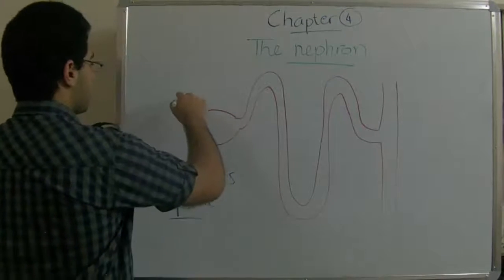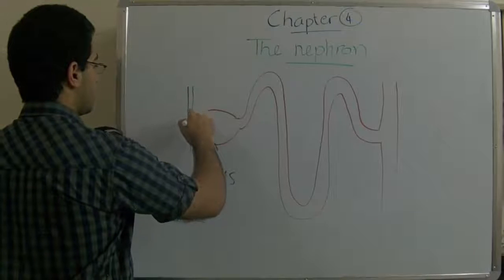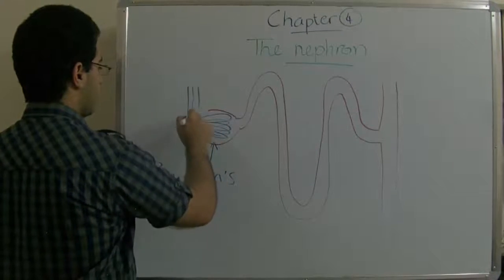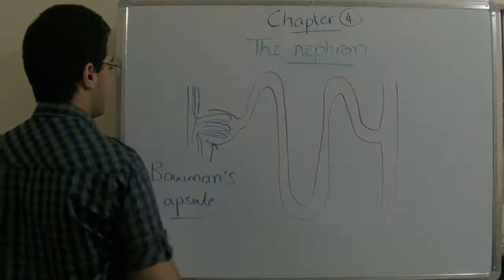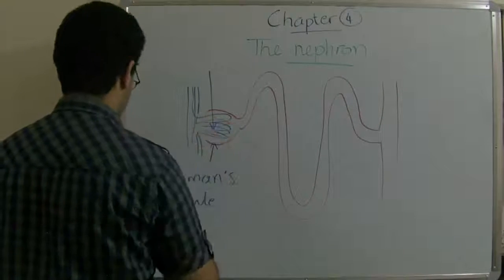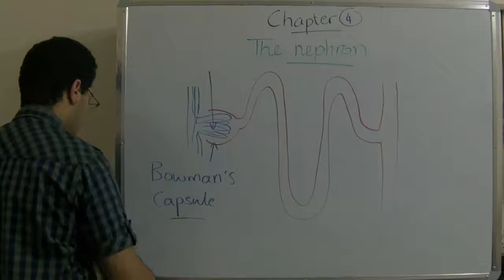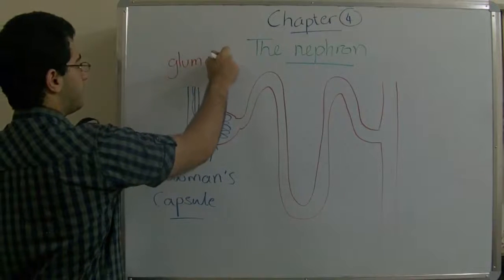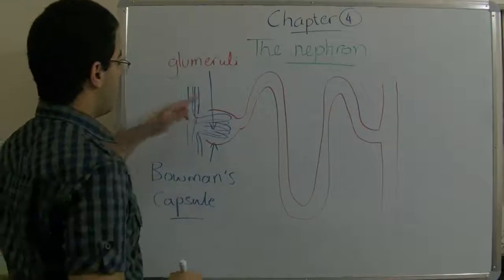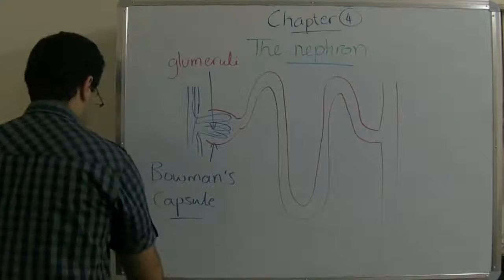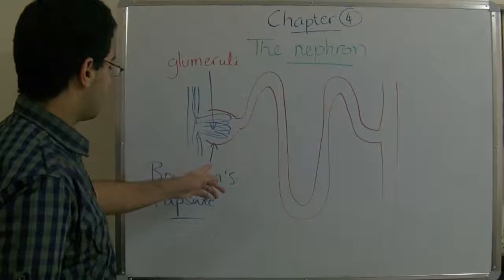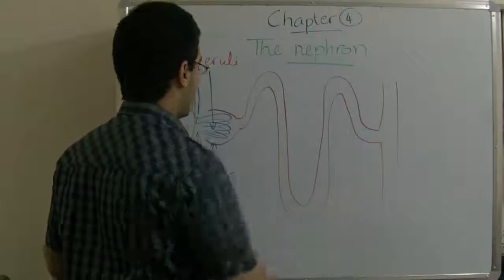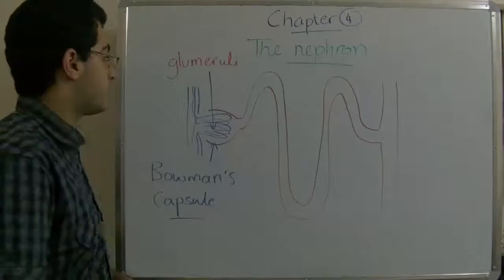Inside this capsule, the blood vessels enter the nephron. These here - this is not mentioned in the book, but they are called glomeruli. So the blood enters through the Bowman's capsule inside these loops here in order to be filtered and the urine is extracted.